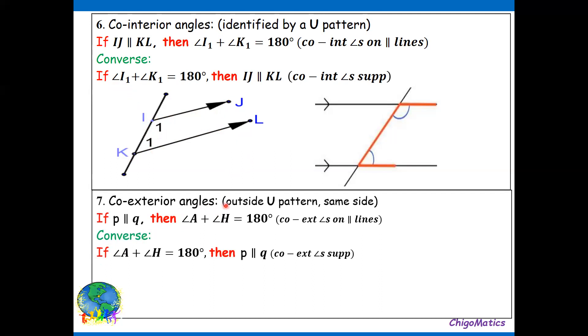Co-exterior angles. Outside the U, same side. Check, here is the U because they are co-interior. Then exterior is outside U, same side. All what it means is now, if you look at this transversal line, this is side number one, side number two. So the angle should be on the same side. As long as line P is parallel to line Q, then you can conclude that if we add angle A plus angle H, we get 180 degrees. I've put my A to be 120, then H to be 60. If we add them, we get 180. The converse is, if angle A plus angle H is 180, then you can conclude that line P is parallel to line Q.